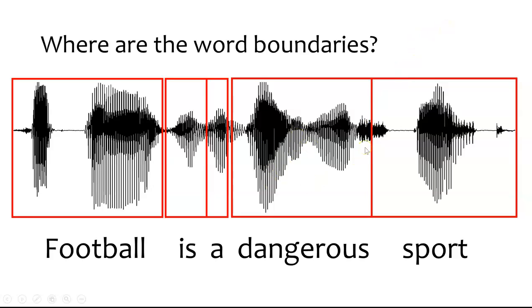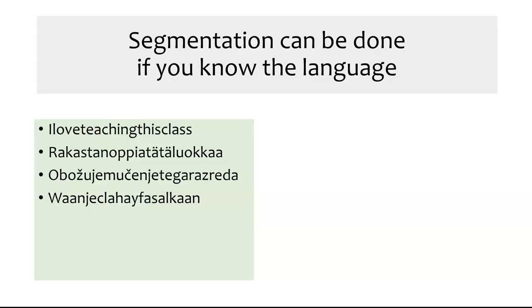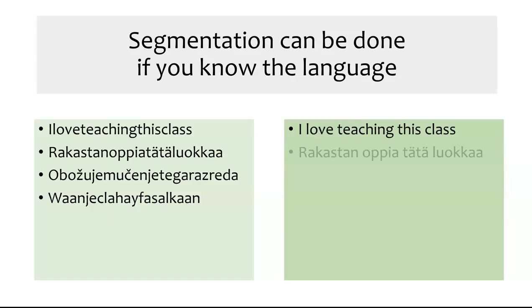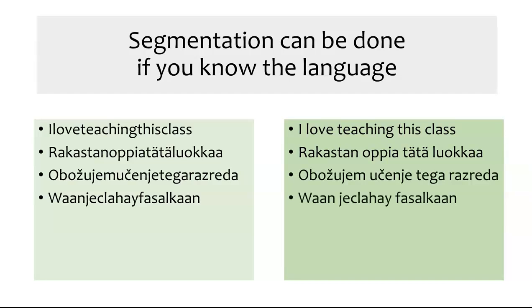In the word 'dangerous', we have lots of different syllables, and we just have to know that they all group together as one word. This is a challenging problem because there are no set rules for where the boundaries occur — you just have to know how the language works. We know this intuitively if we look at text: if you remove all the spaces from sentences, you can recognize them in languages you speak. In English, 'I love teaching this class' is readable, but in Finnish — 'rakastan oppia tata luokka' — if you don't speak Finnish, you wouldn't know where the spaces go. When we speak, we don't put any spaces into the sounds. We put spaces in writing because we know there should be spaces between words, but when spoken aloud there aren't any such spaces. That's the problem — we do it so effortlessly, and yet there's no way we can explain how.